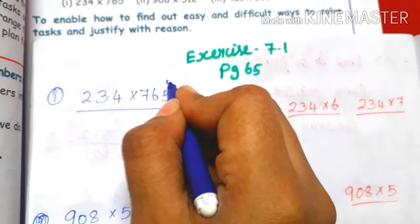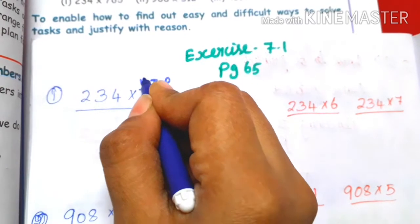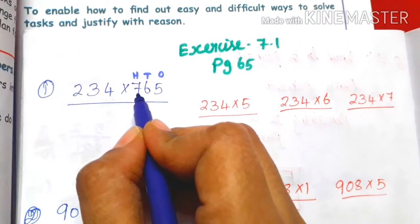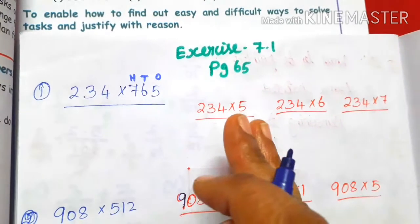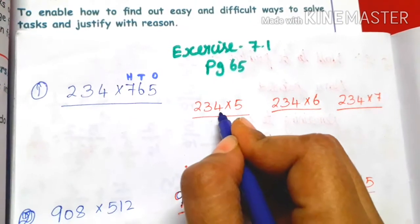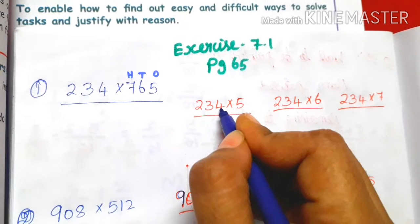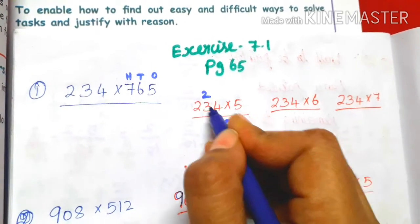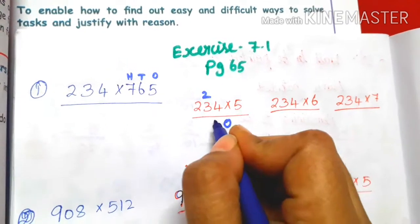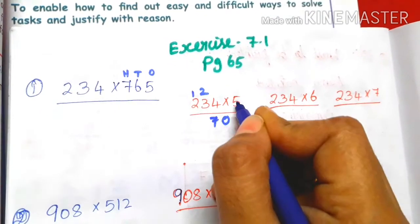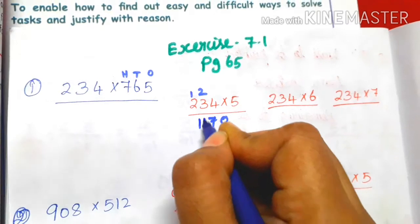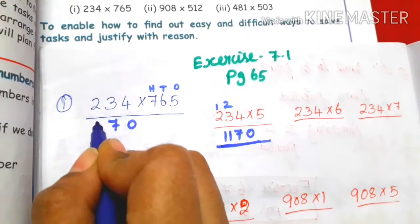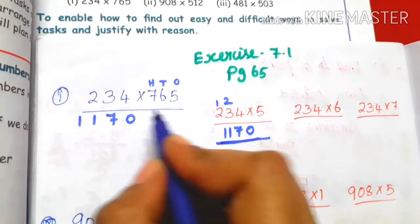This is the ones place. 765 is the multiplier. So 234 into 5: 5 into 4 is 20, so 0, balance 2. 5 into 3 is 15, plus 2 is 17, so 7, balance 1. 5 into 2 is 10, plus 1 is 11. So the result is 1170.